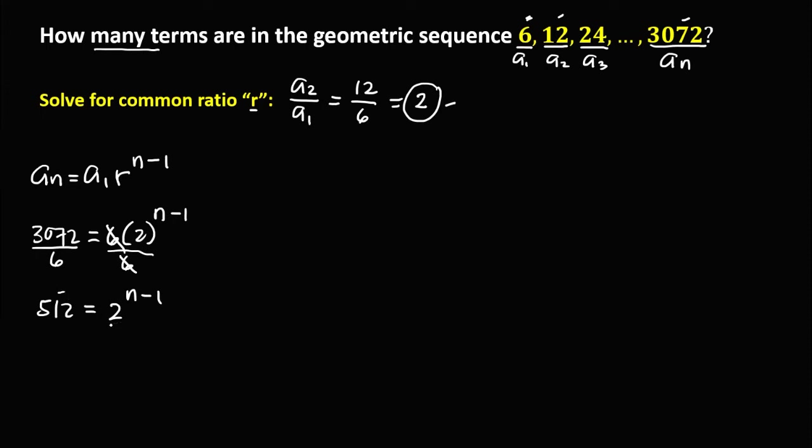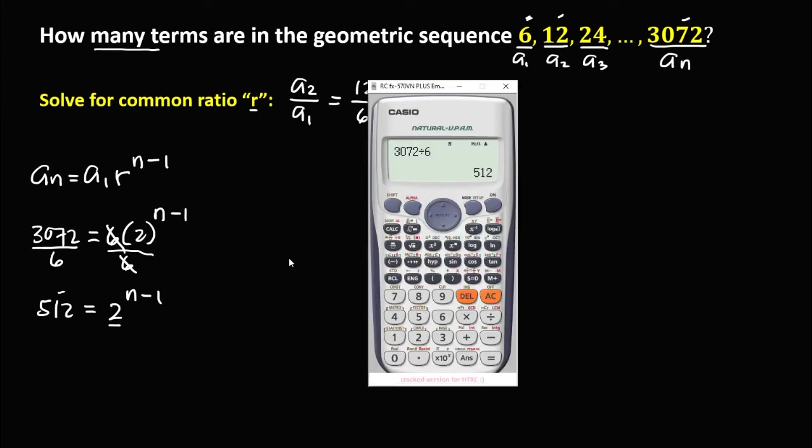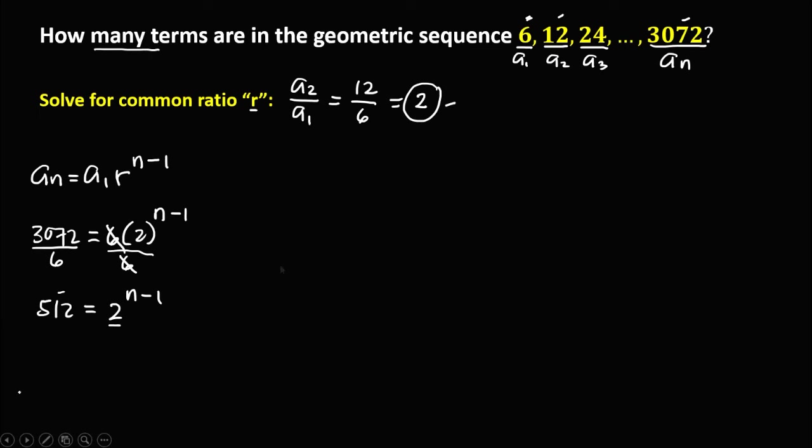We need to rewrite 512 with base 2 to solve for n. Using a calculator: 2⁶ = 64, 2⁸ = 256, 2⁹ = 512. Therefore, 512 = 2⁹.